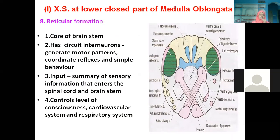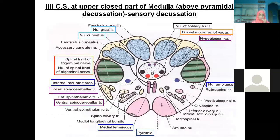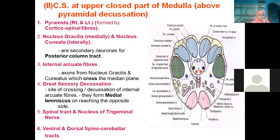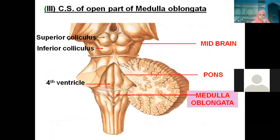Above the pyramidal decussation level, we have the sensory decussation. Learn the sections and label them. The underlying cranial nerve nuclei at this level include the hypoglossal nucleus and the vagal nucleus.